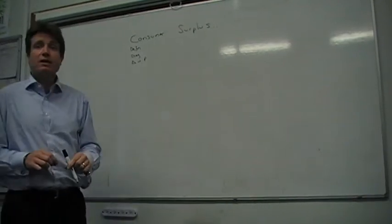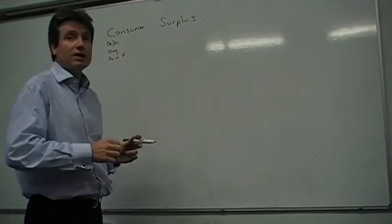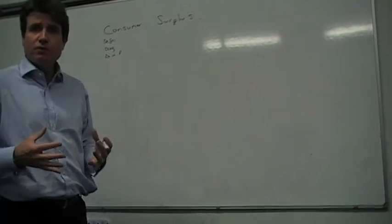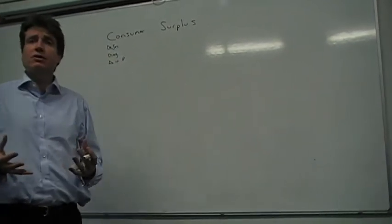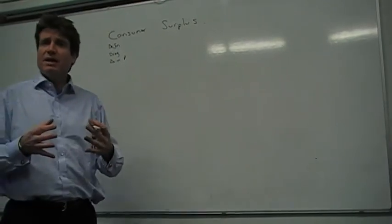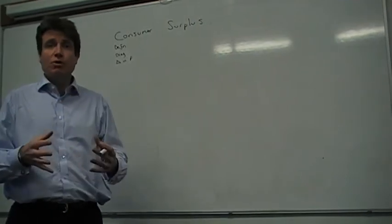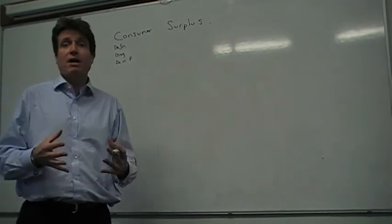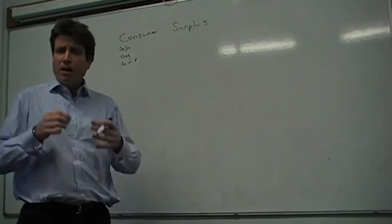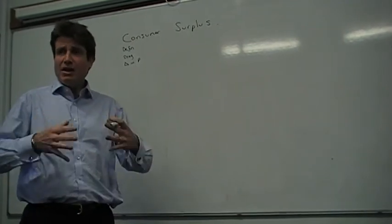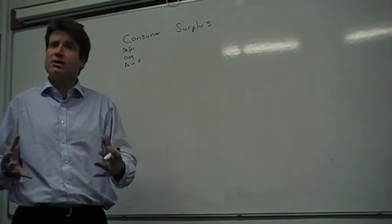Today's topic is consumer surplus. The easiest way of doing this is to start with a definition. It's basically the difference between what consumers are willing to pay for a good, as shown by the demand curve, and what they actually pay for the good, which is shown by the equilibrium price.